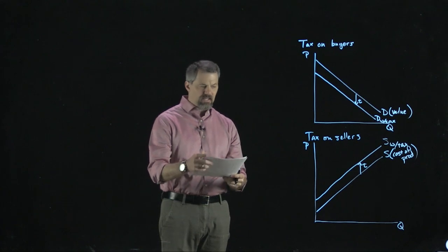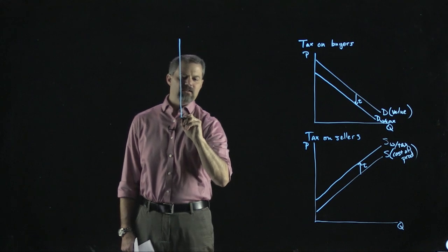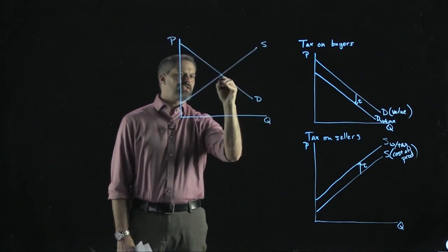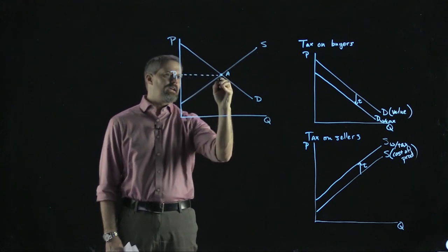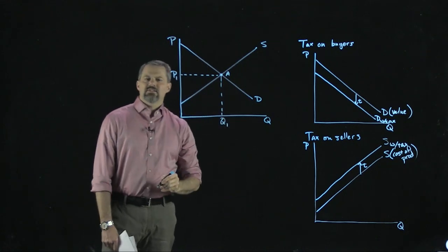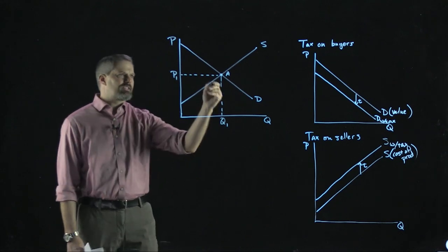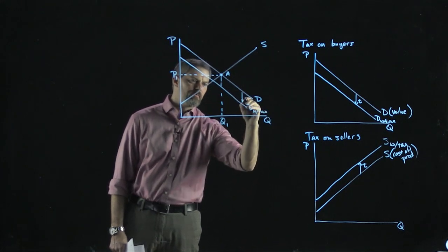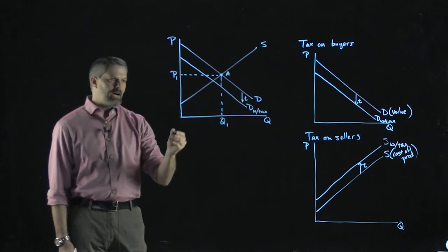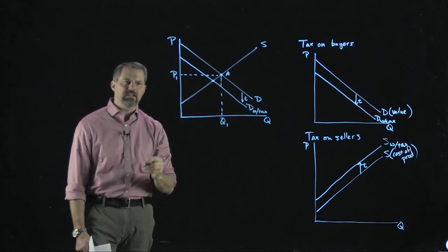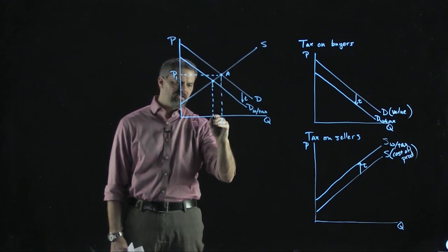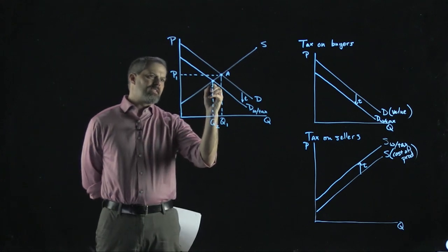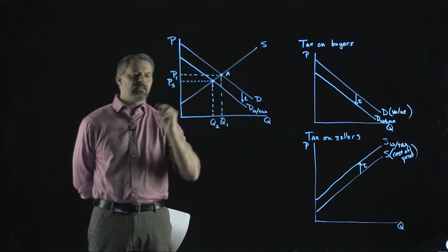Now let's analyze the impact graphically. With a tax on buyers, the demand curve shifts down by T dollars. Looking at the intersection of the new demand curve and supply curve, the tax reduces quantity transacted. The amount the buyer pays to the seller falls — call that the seller's price, PS.